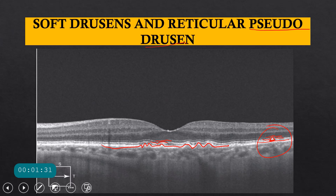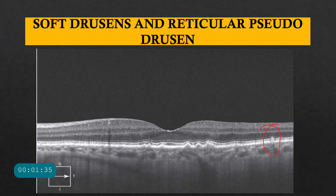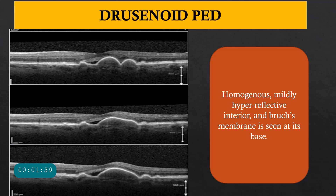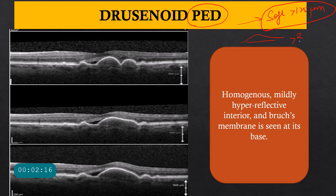Pseudodrusen are associated with greater progression to wet ARMD. Drusen can mix together and cause a separation of the inner collagenous layer of Bruch's membrane from the RPE — that is called pigment epithelial detachment (PED). When this happens because of excessive drusenoid material, it is called a drusenoid pigment epithelial detachment. Soft drusen are above 125 micrometers in size, and when the size increases to about 350 microns, that is what is called a pigment epithelial detachment.